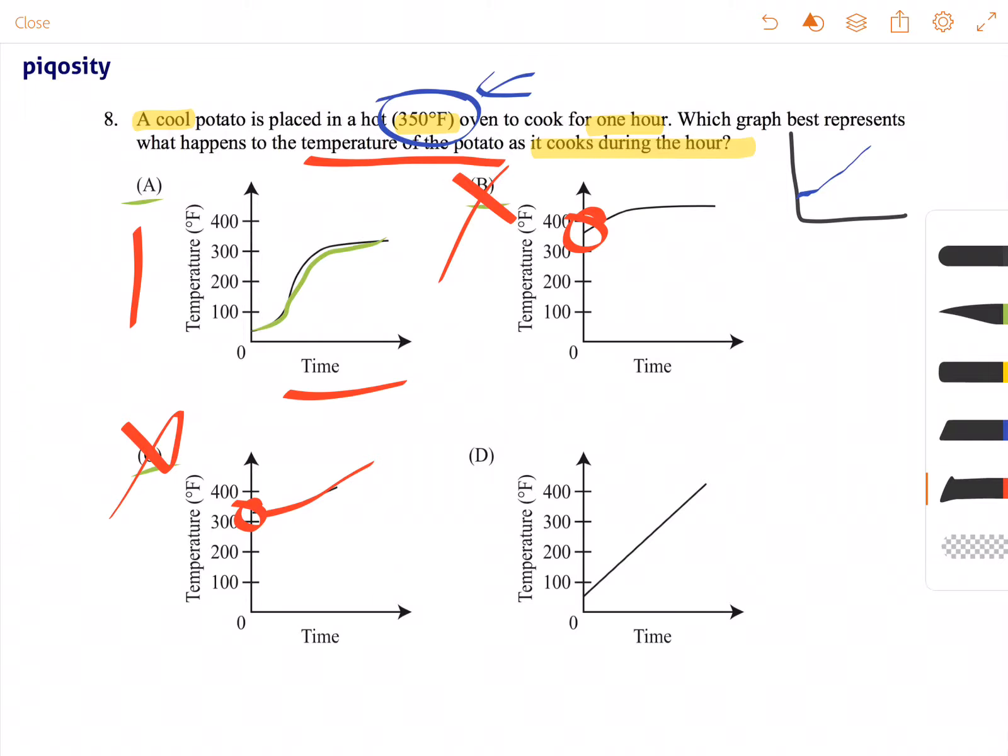Now answer choice D has a cool potato like answer choice A. But take a look at the temperature. It goes well above 400 degrees Fahrenheit, which is more than what the oven is at. So answer choice D doesn't make any sense.